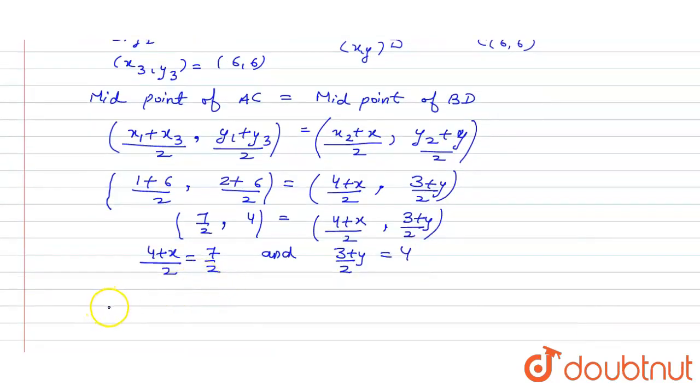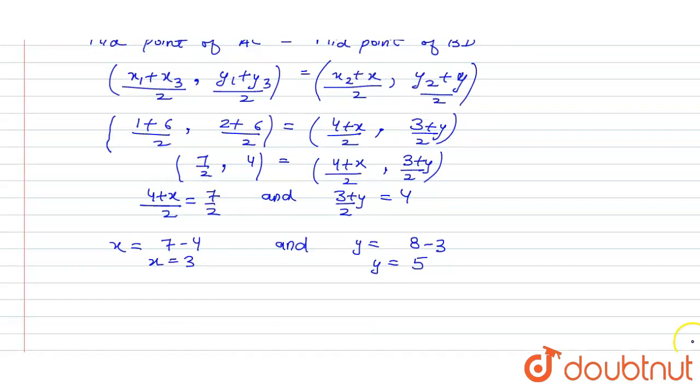Now, solving both, we will get X equals 7 minus 4 that is X equals 3 and Y equals 8 minus 3 that is Y equals 5. So, the required coordinates of 4th vertex which is D are X, Y and we get the values as 3 and 5.